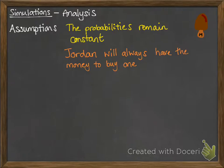Jordan will always have the money to buy one. That's an assumption we're making — that 80% of the time he decides to buy the magnum, he actually will have the money to be able to do that every time he decides to buy one. This means that we don't have to factor that into our simulation.